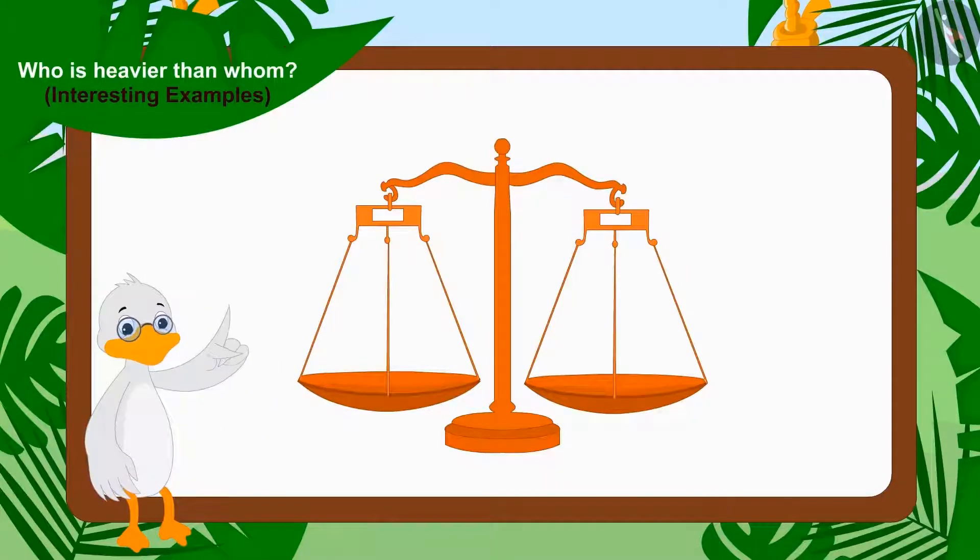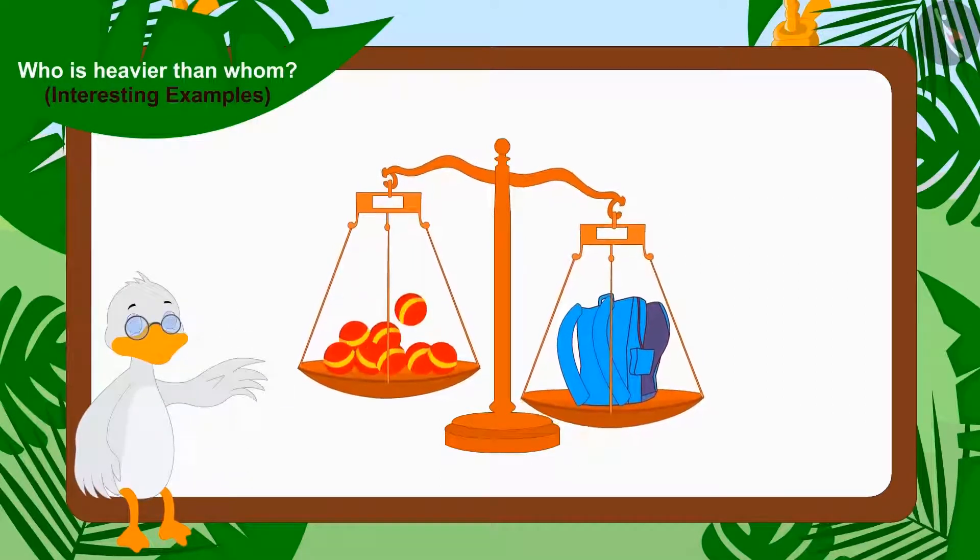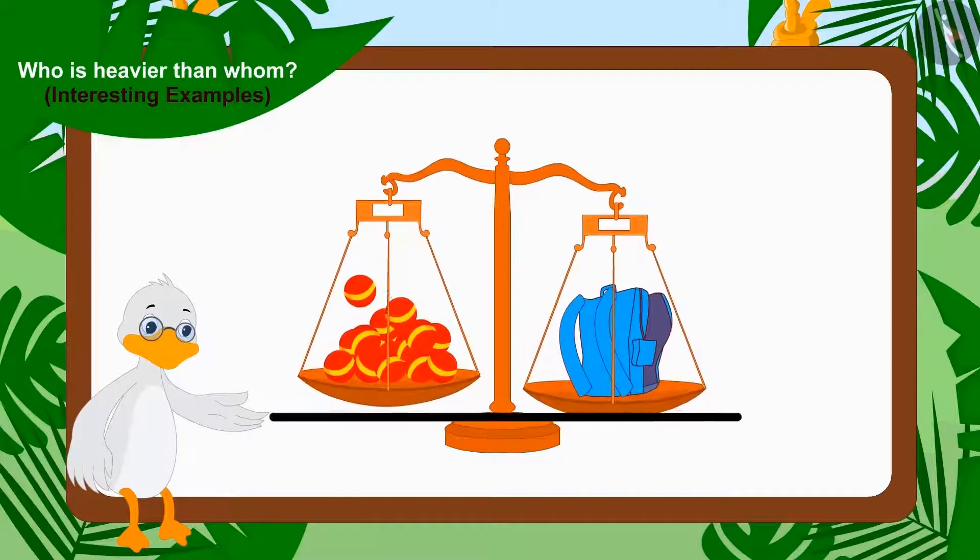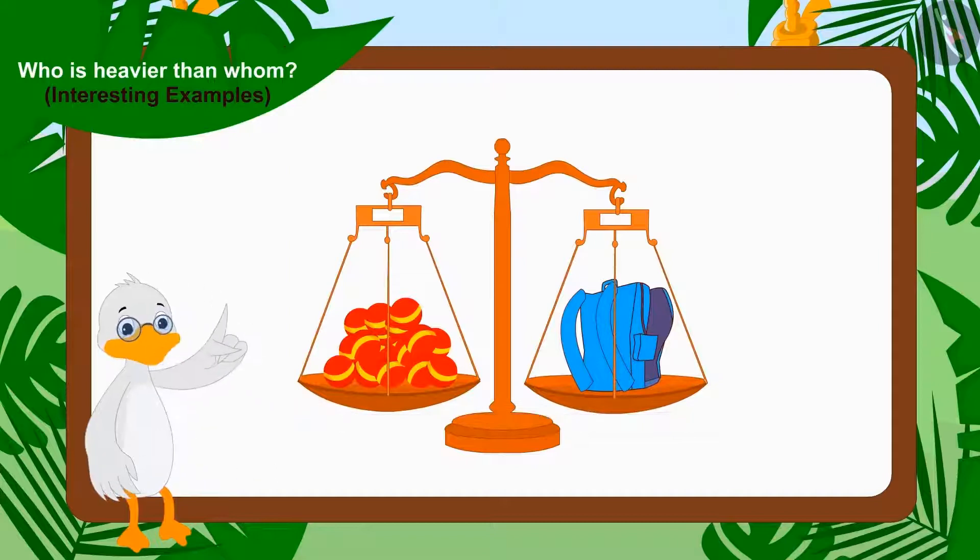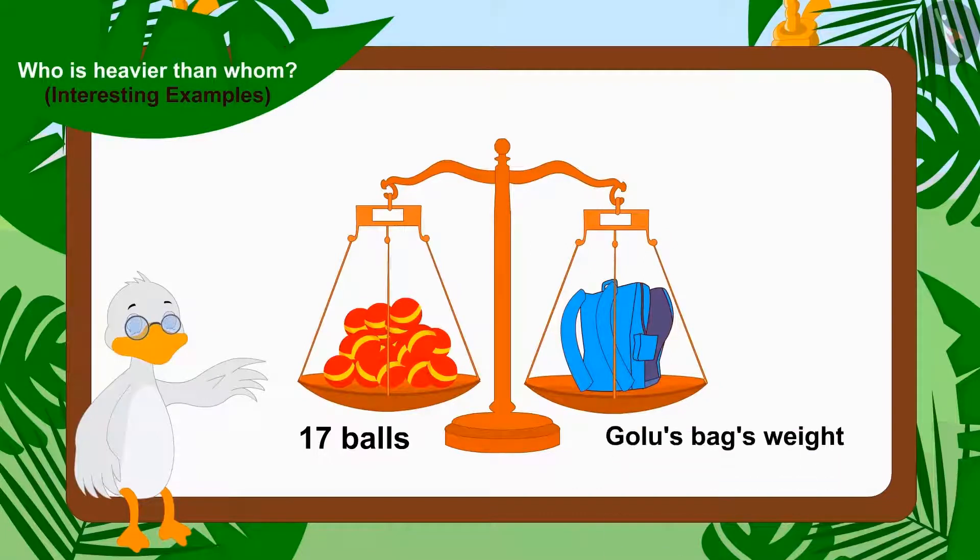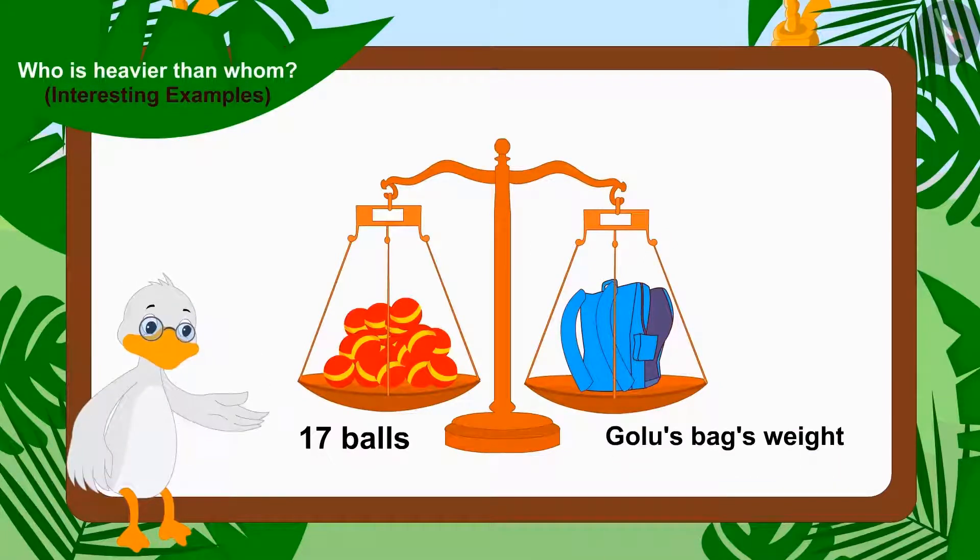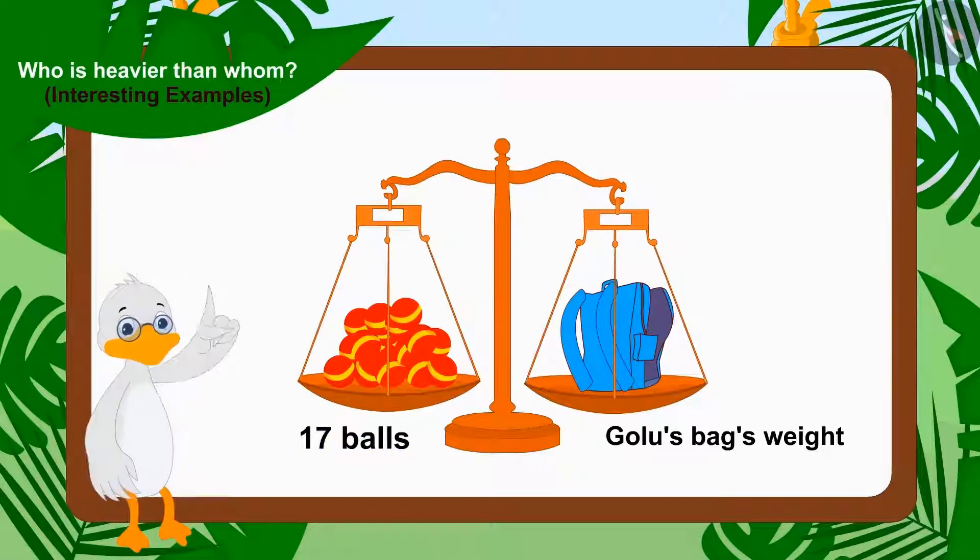Now, Uncle weighed Golu's bag with the scales. This time, when the plate came to the same level, there were seventeen balls in the plate. This means that the weight of seventeen balls equals weight of Golu's bag.